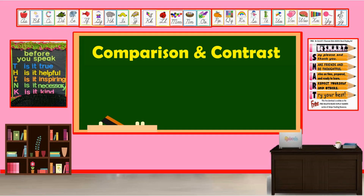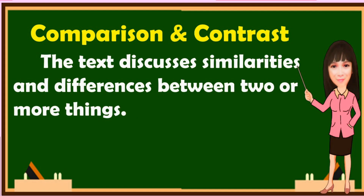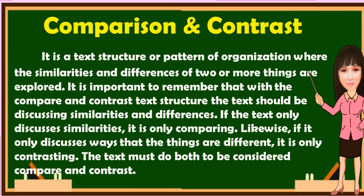Here is another text type: comparison and contrast. What is comparison and contrast text type? The text discusses similarities and differences between two or more things. It is important to remember that with the compare and contrast text structure, the text should be discussing both similarities and differences. If the text only discusses similarities, it is only comparing. If it only discusses differences, it is only contrasting. The text must do both to be considered compare and contrast.